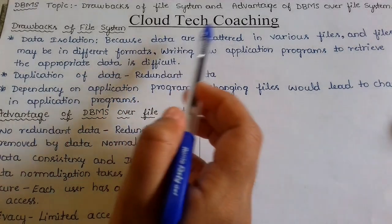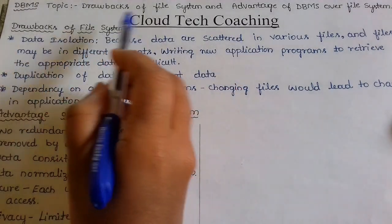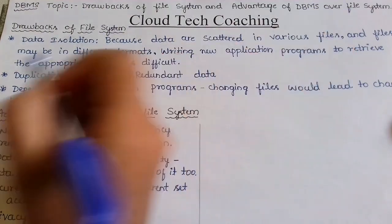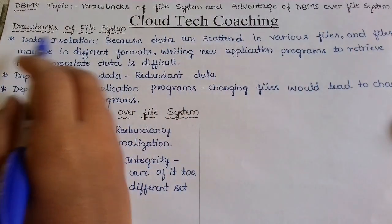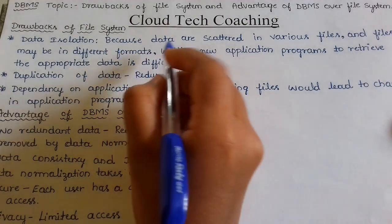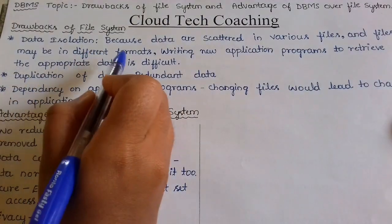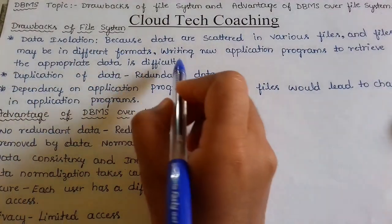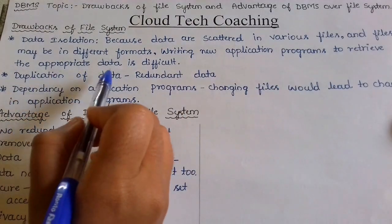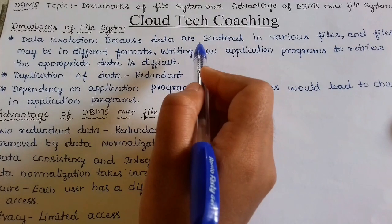Welcome to Cloud Tech Coaching. Today we will discuss the drawbacks of file systems and the advantages of DBMS over file systems. The first drawback is data isolation: because data are scattered in various files, and files may be in different formats, writing new application programs to retrieve the appropriate data is difficult.